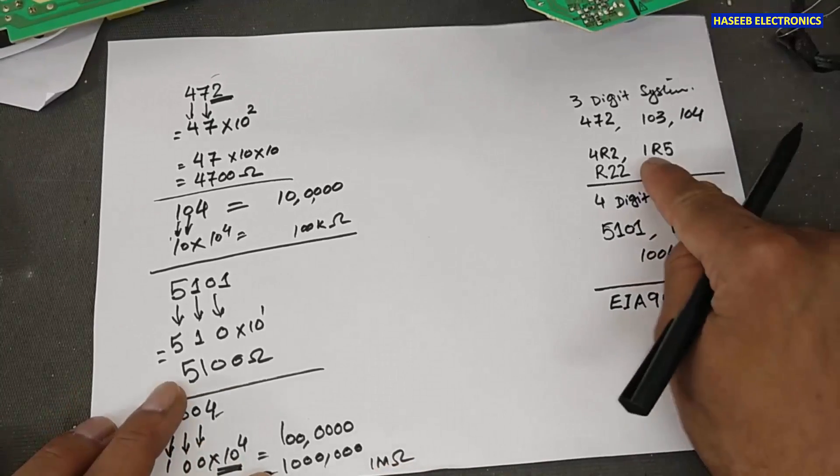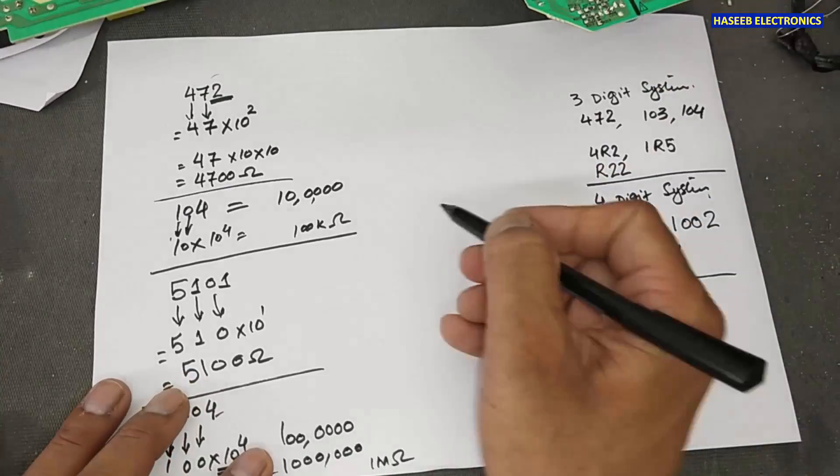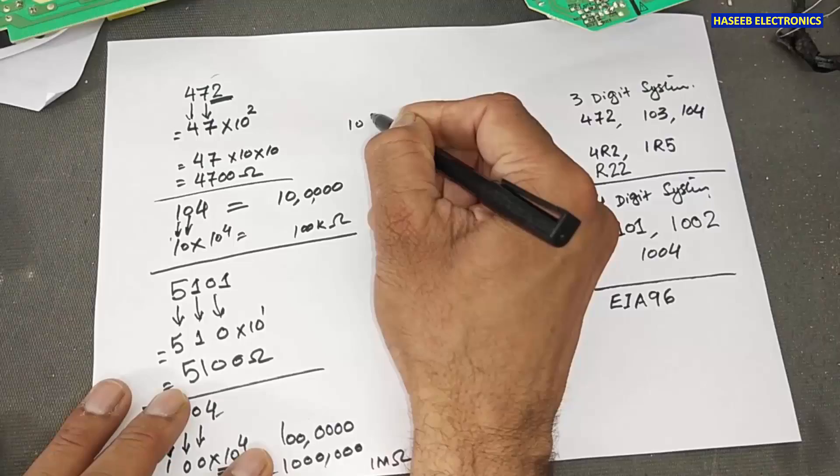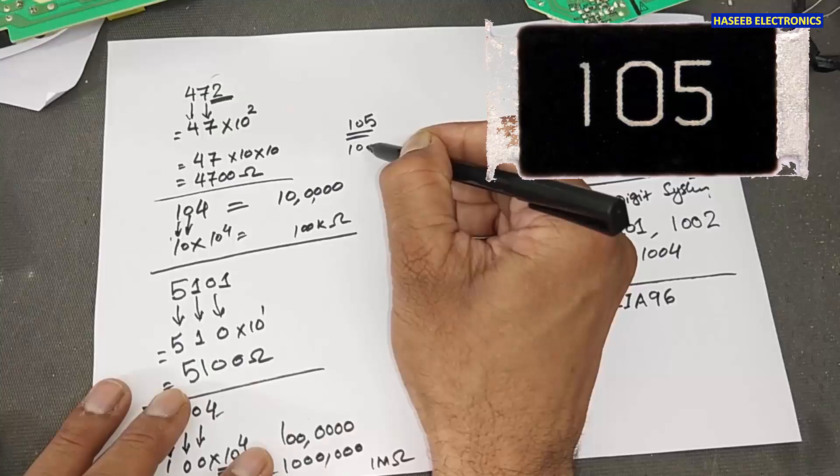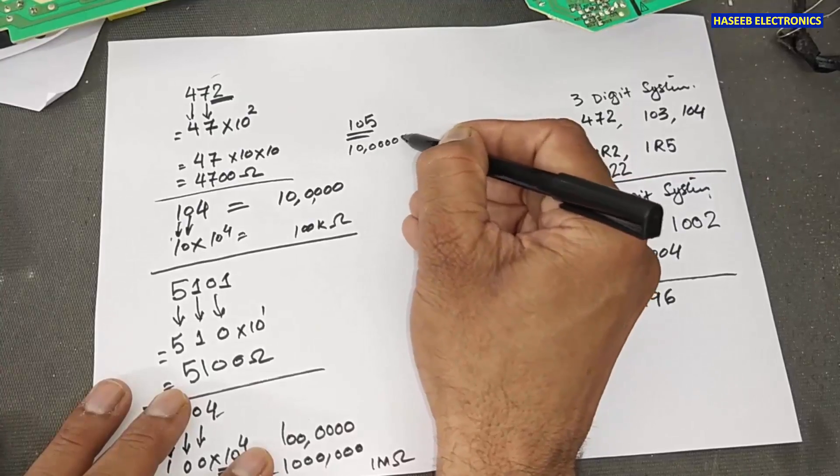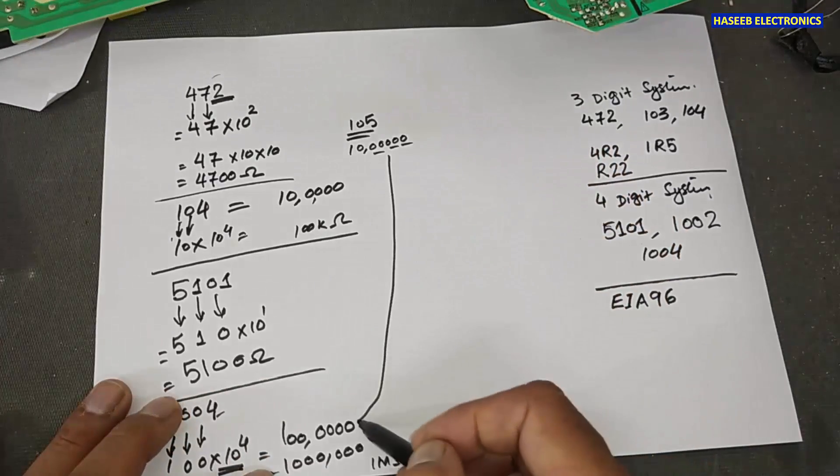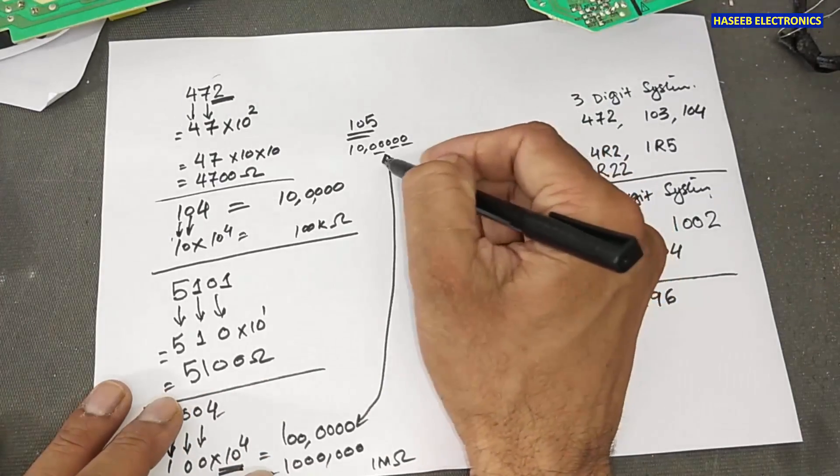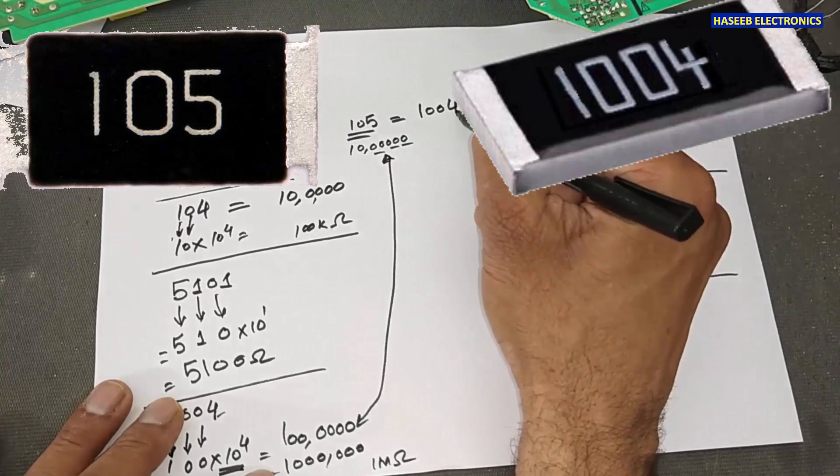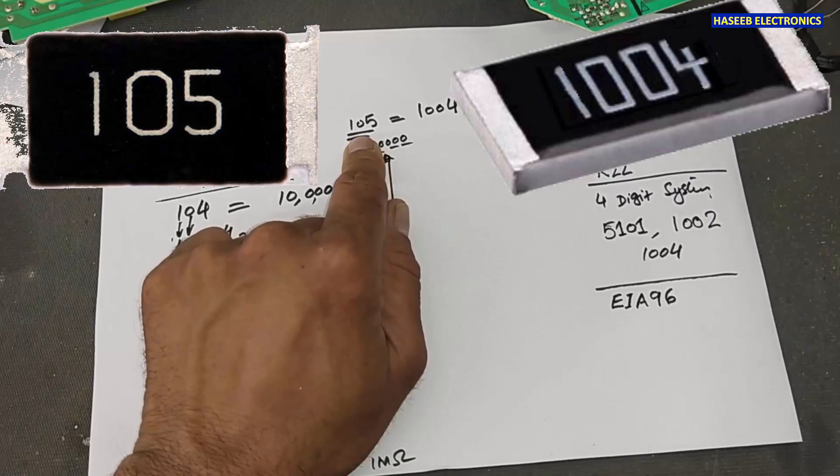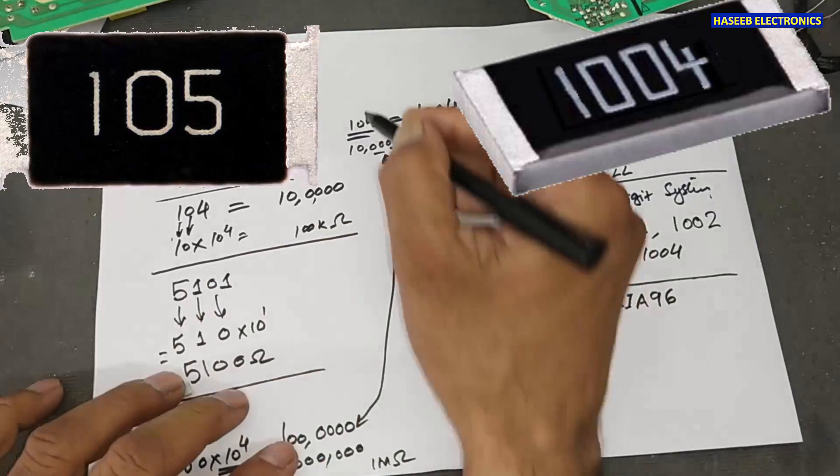The same here. If it is 1 megaohm and if we will see here, if some number is 1, 0, 5, it will become same 1, 0 and 5 zeros. So, this value and this value will equal. So, we can say 1, 0, 5 is equal to 1, 0, 0, 4. If we have SMD resistor with 1, 0, 5 code, it will equal to 1, 0, 0, 4.